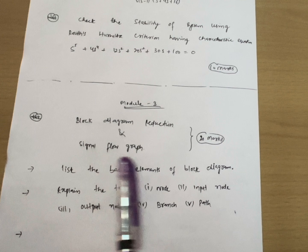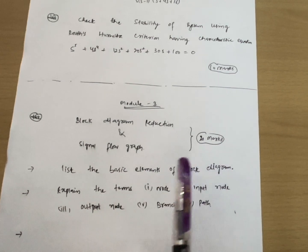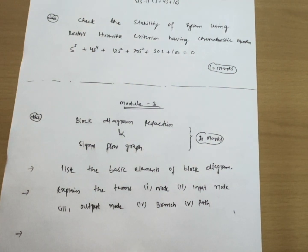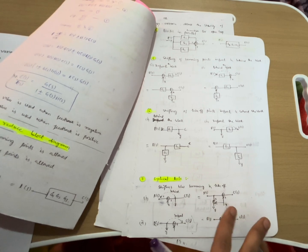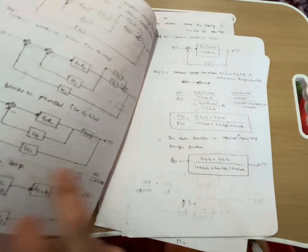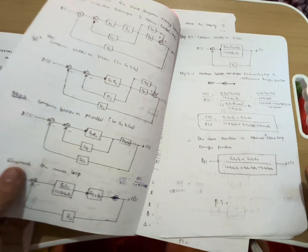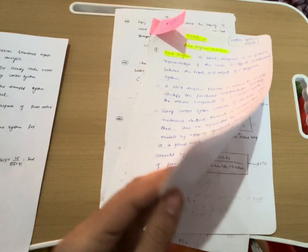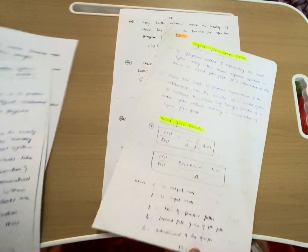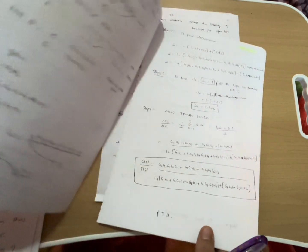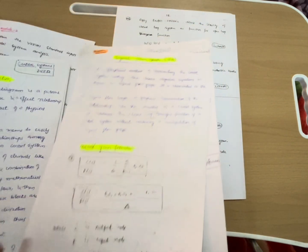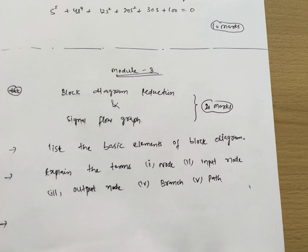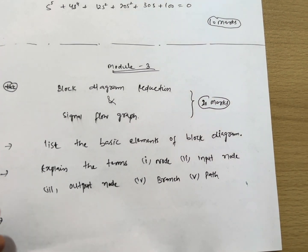Now coming to Module 3: block diagram reduction and signal flow graph, which may be a direct 20-marks question. Block diagram problems are available in the notes — there are some rules of block diagram reduction to remember, and you can easily solve those problems. Signal flow graph problems are also included. These were the three passing modules — Module 5, Module 4, and Module 3 — and one can easily score more than 50 marks from them.